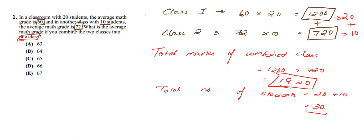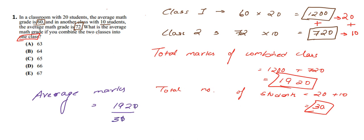Now we have the total marks and the total number of students, so we can calculate the average marks. Average marks equals total marks 1920 divided by total number of students 30, which gives us 64. So 64 is the correct answer, that is option B, and not 66. If you go directly by adding and dividing by 2, you get tricked by the question.